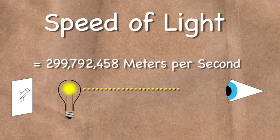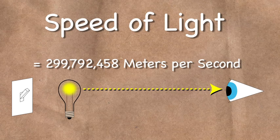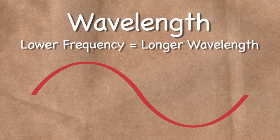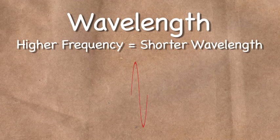Radio waves travel at the speed of light, and the distance traveled during one complete cycle determines the wavelength of the RF signal. Lower frequencies have longer wavelengths, while higher ones have shorter wavelengths.